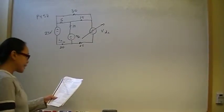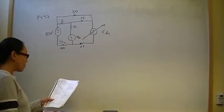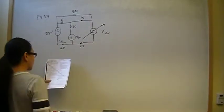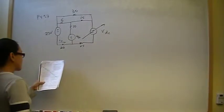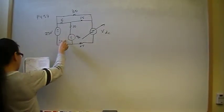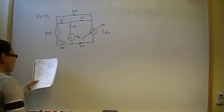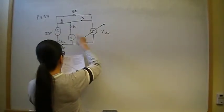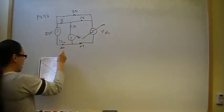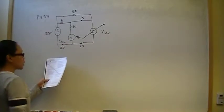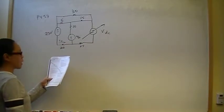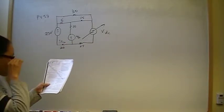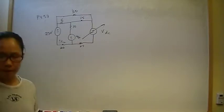The problem states the variable DC voltage source is adjusted so that I0 is zero. First, we're going to find the value of the DC voltage that makes that happen. Then secondly, we're going to prove our answer is correct by showing that power developed equals power dissipated.